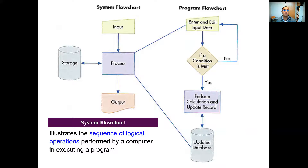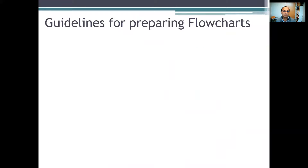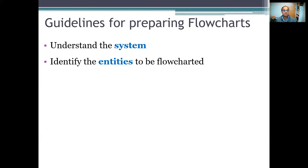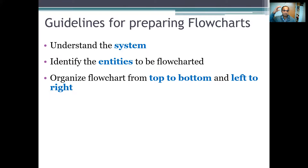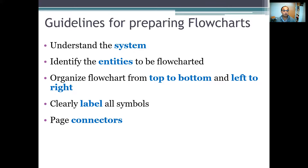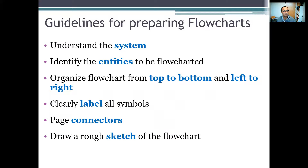What are the key steps to keep in mind when building a flowchart? Number one, we need to understand the system. Before making the flowchart, we have to identify the subunits working in it. For example, the accounting department is the system, and the subunits such as payroll, accounts payable, and accounts receivable departments are called entities. Then we build the flowchart from top to bottom or left to right, and we put labels on the symbols. If the flowchart takes more than one page, we use connectors. We also try to sketch it on paper before building it in Microsoft Word or Lucidchart.